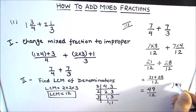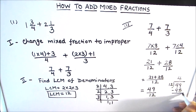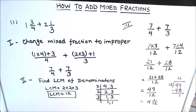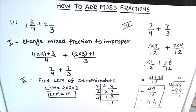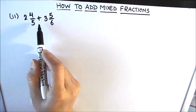49 divided by 12: 12 × 4 = 48, and the remainder is 1. So we can write 49/12 as the mixed fraction 4 1/12, where 4 is the quotient, 1 is the remainder, and 12 is the denominator. This is our final answer. This is how we add mixed fractions. Let's move on to our second example: 2 4/5 + 3 5/6.